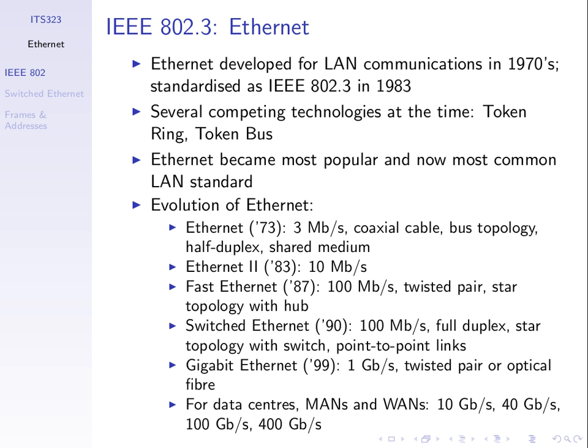At the time there were some competing technologies, but Ethernet was the most popular and still is. It has evolved over time. In 1973, it had a data rate of around 3 megabits per second using coaxial cables and a bus topology. It used half-duplex communications, meaning if there were two computers connected, one could transmit but the other had to wait — only one transmits at a time. The technology improved over time.